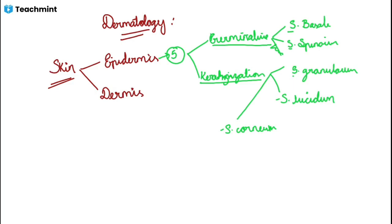You should know a few key things about stratum basale — it is the innermost layer. In stratum basale we have melanocytes, which give color to the skin by producing the melanin pigment. The basal layer also has another type of cell, the Merkel cell, which is a sensory cell that receives touch stimulus. We will be discussing it later.